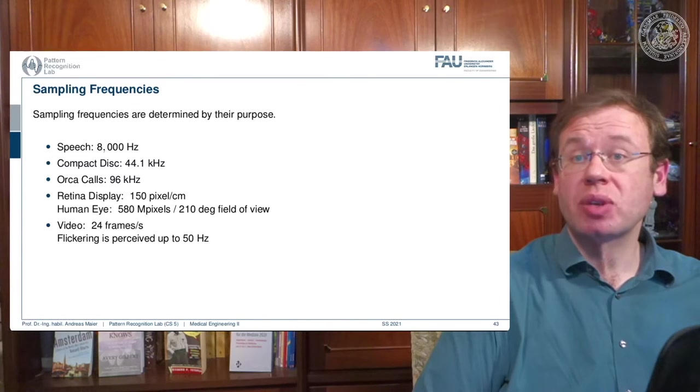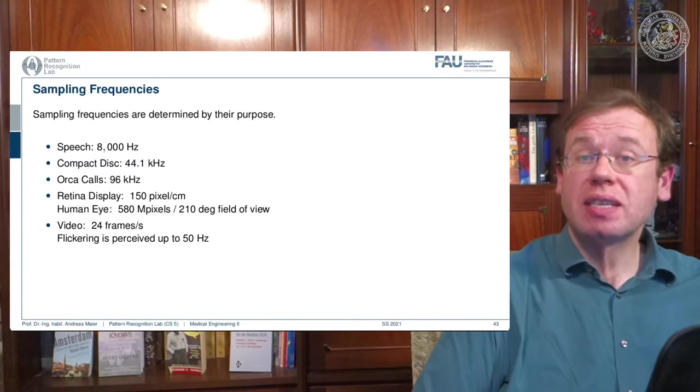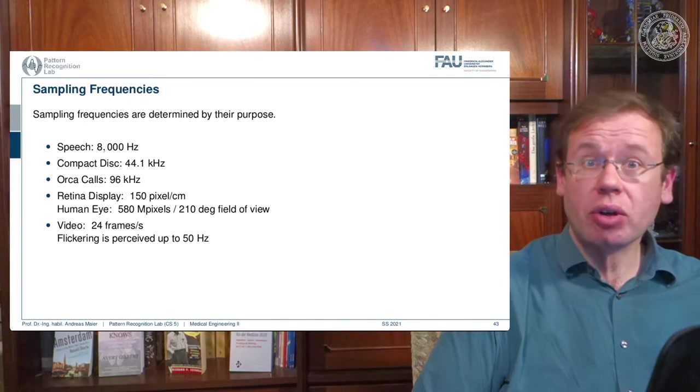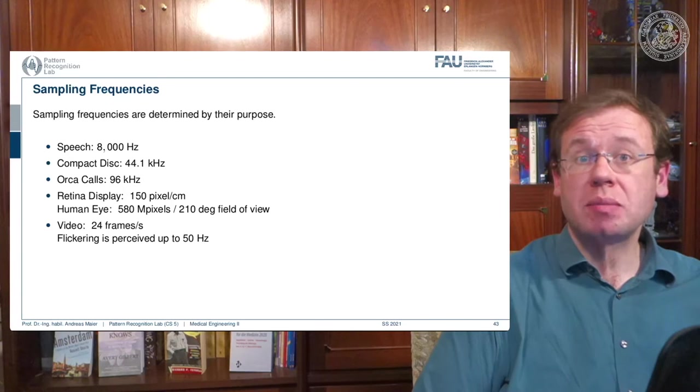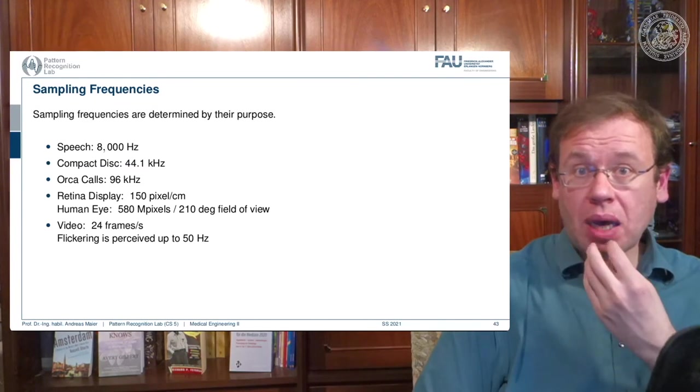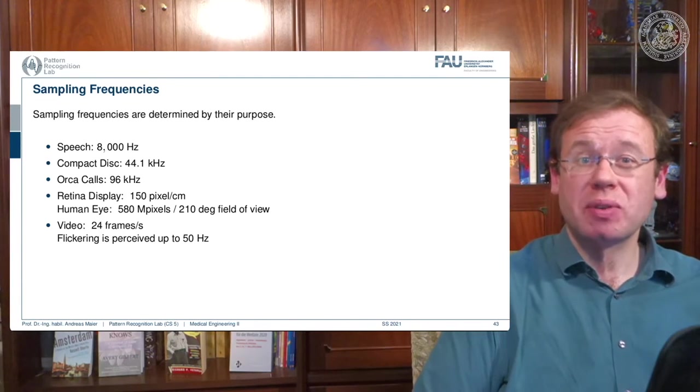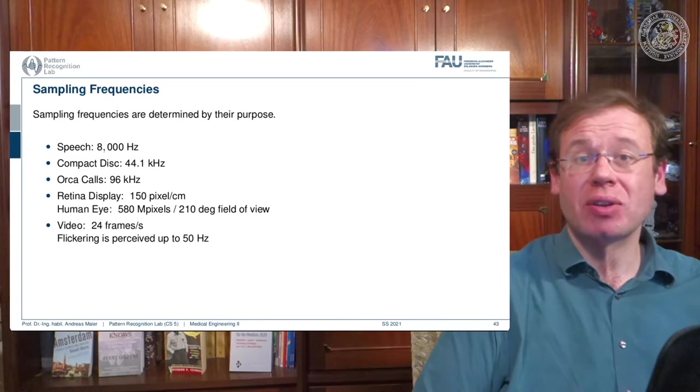8 kilohertz is the maximum frequency that is contained in speech, which means that if you're sampling at 16 kilohertz, you're able to reconstruct speech entirely. So your articulators, your mouth and vocal folds and so on, they are not able to produce frequencies that are higher than 8,000 hertz.